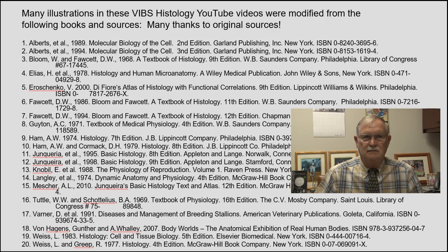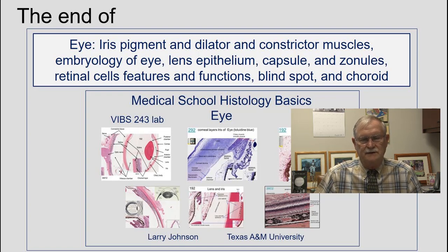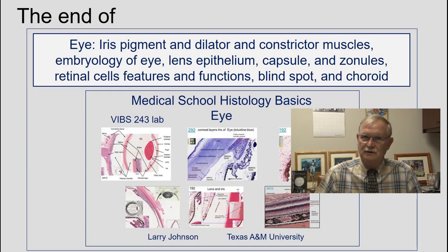We want to acknowledge the original sources of figures, images, and drawings taken from various textbooks and original sources. This is the end of the eye presentation covering the iris, pigmentation, dilator and constrictor muscles, the embryology, lens epithelium, capsule, zonules, and retinal features and function of the blind spot and the choroid.